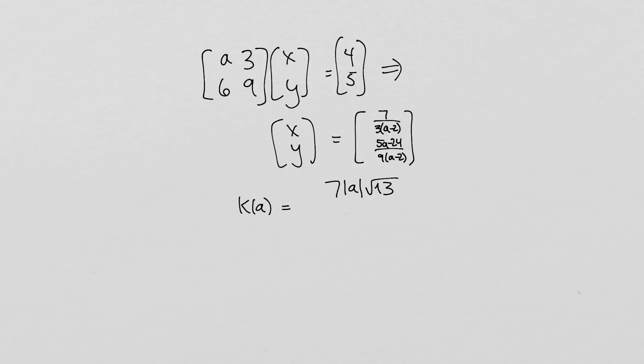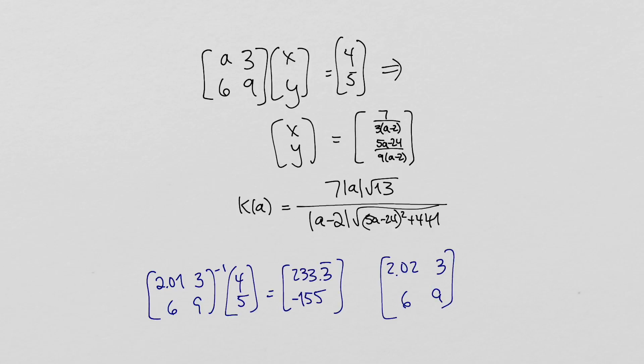We can use the formula for a condition number to find that kappa is given by an expression with the absolute value of a minus 2 in the denominator. In other words, when A is very close to 2, this matrix has a large condition number, and small changes in the input value A lead to large changes in the solution that come out.